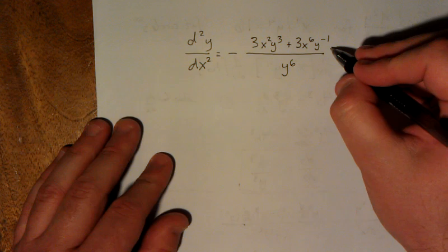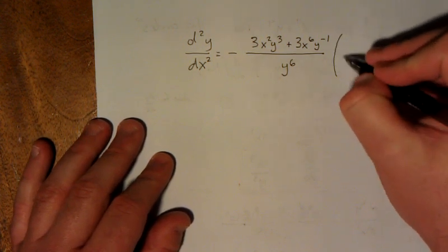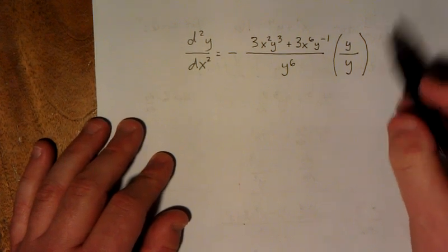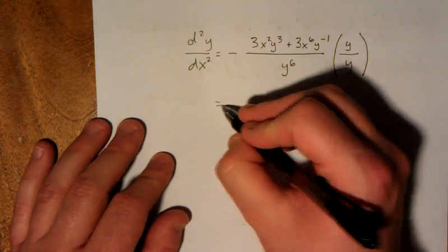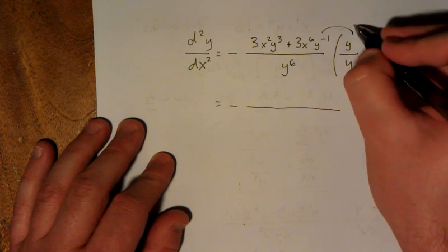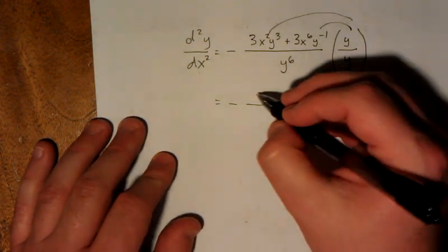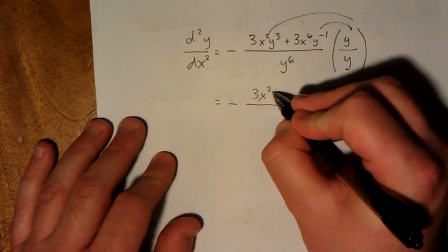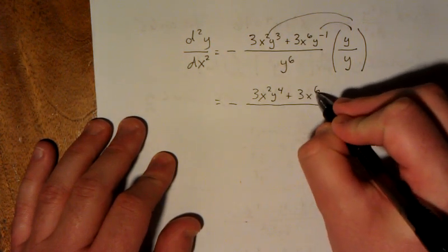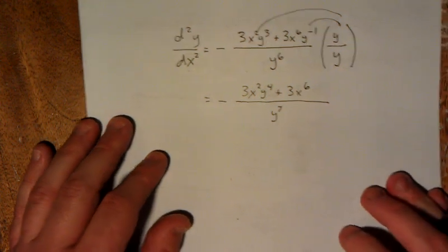Now that y to the minus one is causing me some grief. I don't like to have fractions inside of fractions, so I am going to get rid of that by multiplying by y over y. That factor of y distributes to both terms in the numerator, giving us 3x squared y to the fourth plus 3x to the sixth, all over y to the seventh.